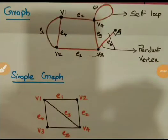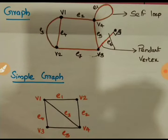Today let us see what is a graph and what are the terms used in a graph. In the picture on the top you can see a graph. A graph is a set of certain objects V equal to V1, V2 etc. and set of objects E equal to E1, E2 etc., where graph can be represented as G equal to V, E where V is the set of vertices and E is the set of edges.